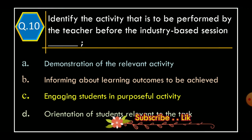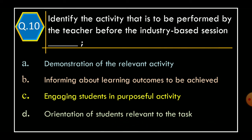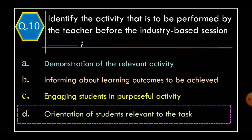Question 10. Identify the activity that is to be performed by the teacher before the industry-based session: Option A. Demonstration of relevant activity. Option B. Informing about learning outcomes to be achieved. Option C. Engaging students in purposeful activity. Option D. Orientation of students relevant to the task. The correct option is Option D: Orientation of students relevant to the task.